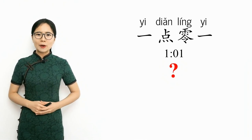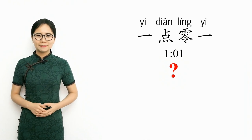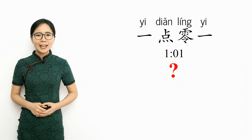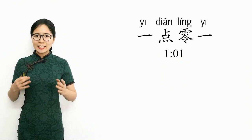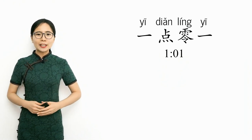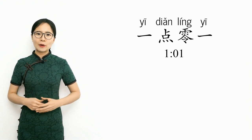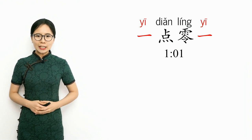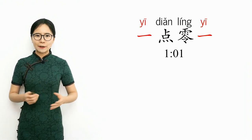In the phrase for a time such as 1:01, does the 'let it be Yi' rule apply? What tone should Yi have? Exactly — Yi dian ling yi is a time, so it follows the 'let it be Yi' rule. Yi should keep its default tone, the first tone.